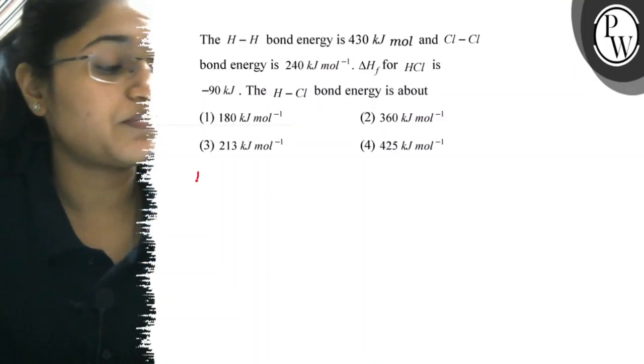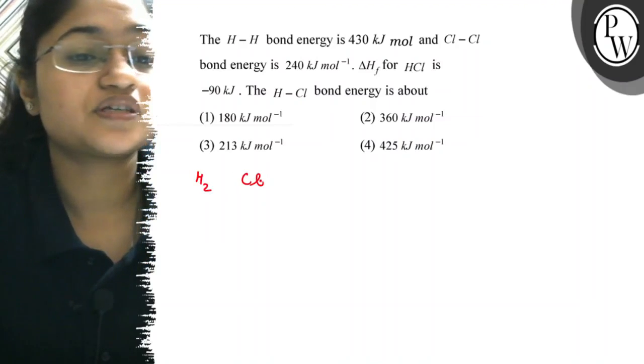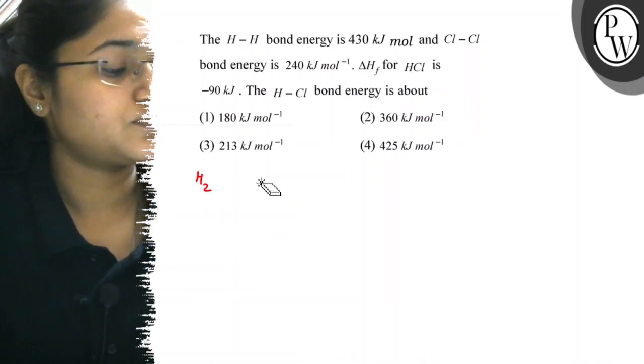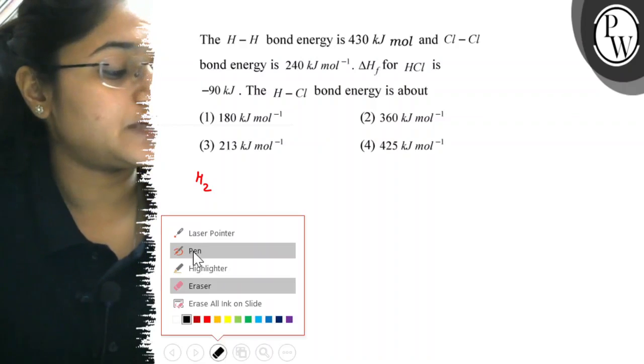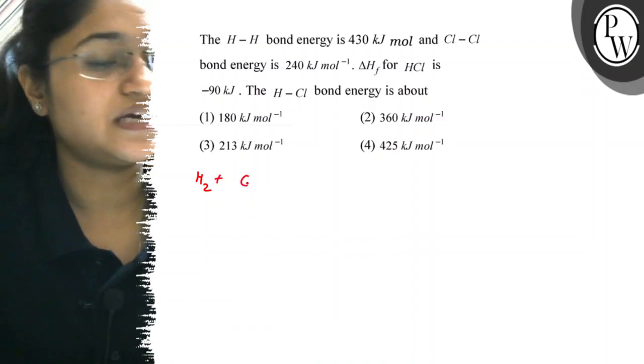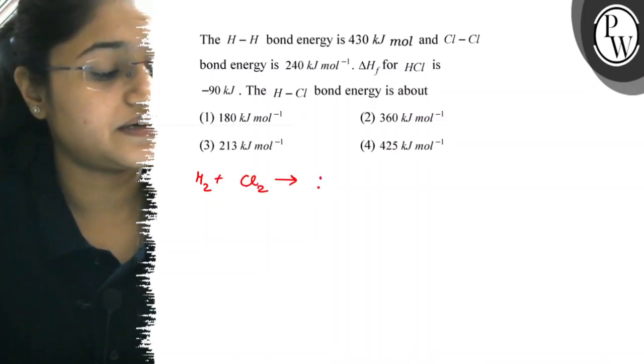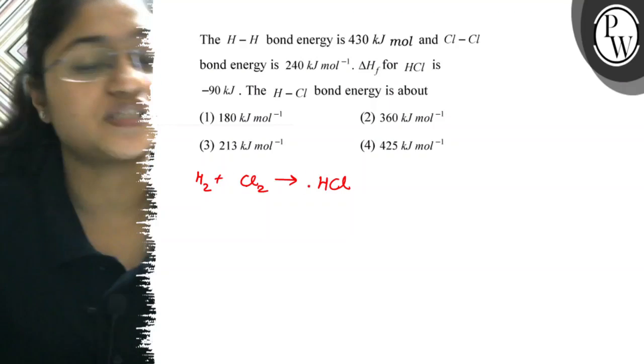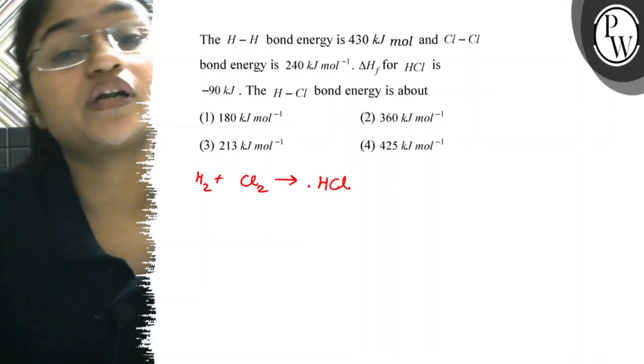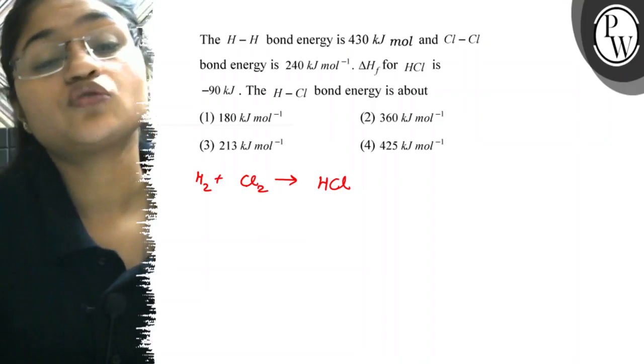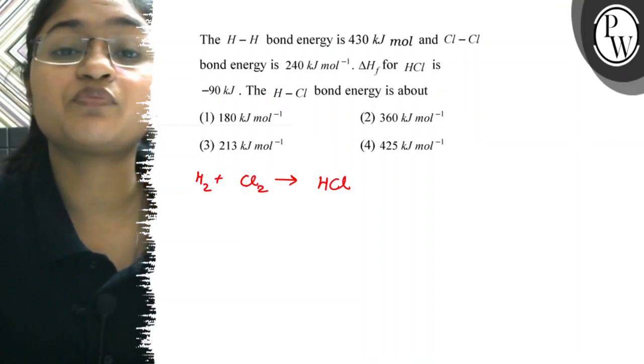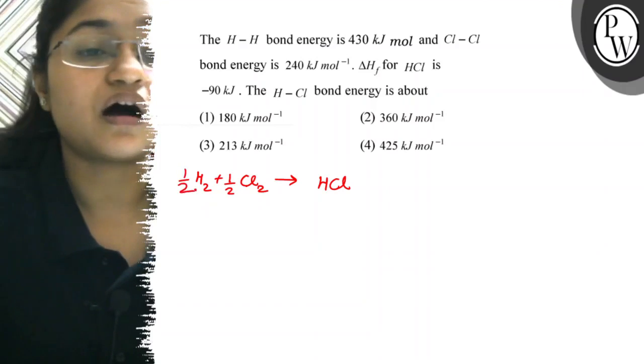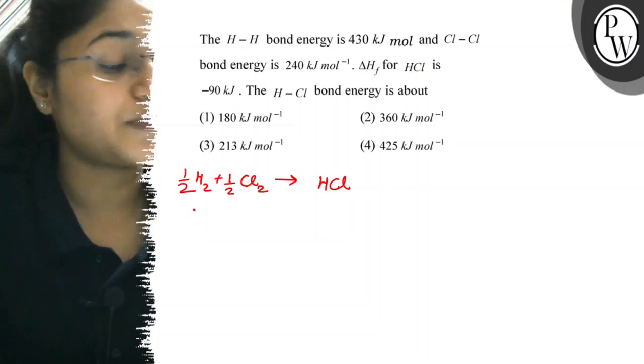So H2 and Cl2 form HCl. If we balance it, we need to find bond energy of HCl, so we need to write it in stoichiometric form, preferably one. We can do it if we have half of H2 and half of Cl2. Now what will happen?